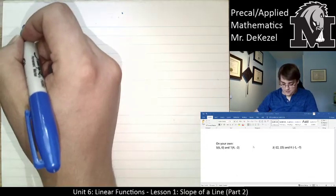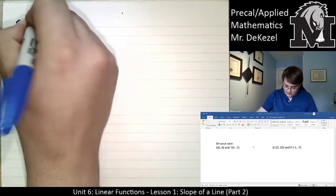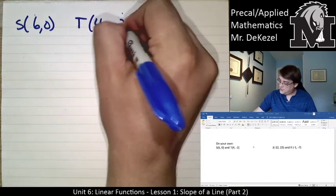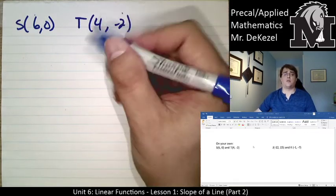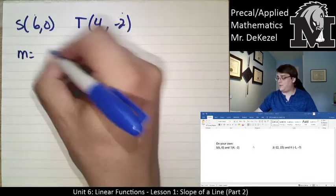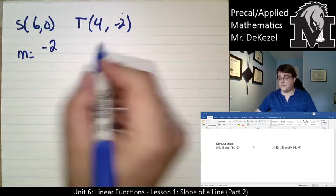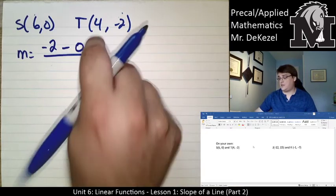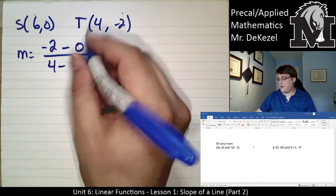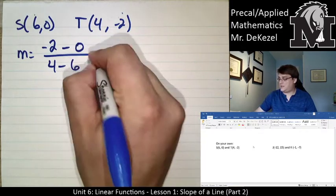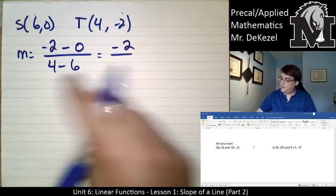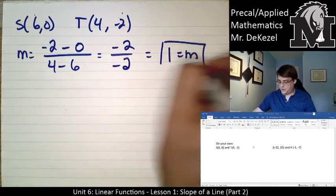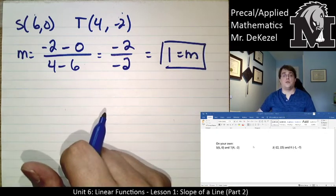Okay, let's do this. We have the point S, which is 6, 0, and the point T, which is 4, -2. We got the y2 value. So, m is equal to the y2 value. That's -2. Subtract the y1 value, which is 0. We take the x2 value, which is 4, and we subtract the x1 value, which is 6. So, -2 on the top and -2 on the bottom. That actually gets us 1 for our slope. So, our slope for those two points is 1.